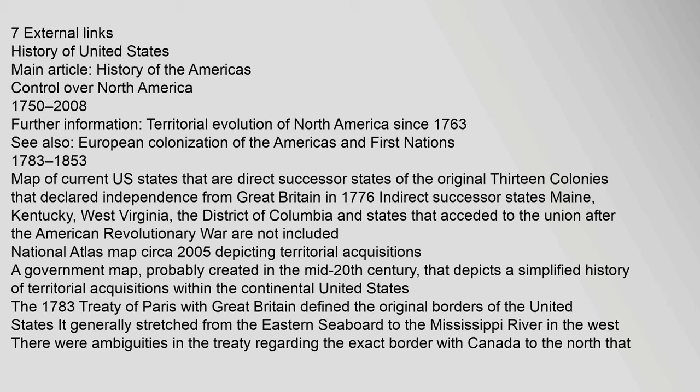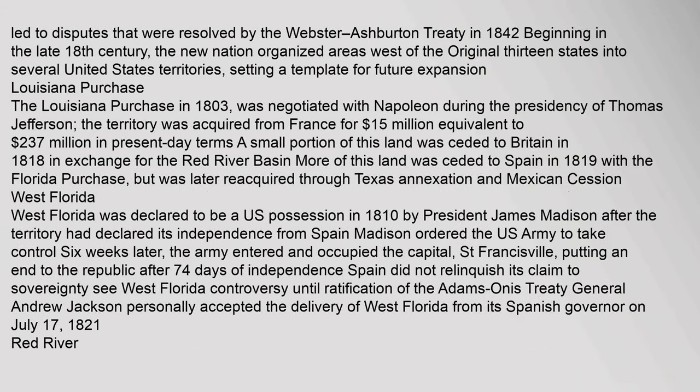The 1783 Treaty of Paris with Great Britain defined the original borders of the United States, generally stretching from the eastern seaboard to the Mississippi River. There were ambiguities regarding the exact border with Canada to the north, leading to disputes resolved by the Webster-Ashburton Treaty in 1842. Beginning in the late 18th century, the new nation organized areas west of the original thirteen states into several territories, setting a template for future expansion.